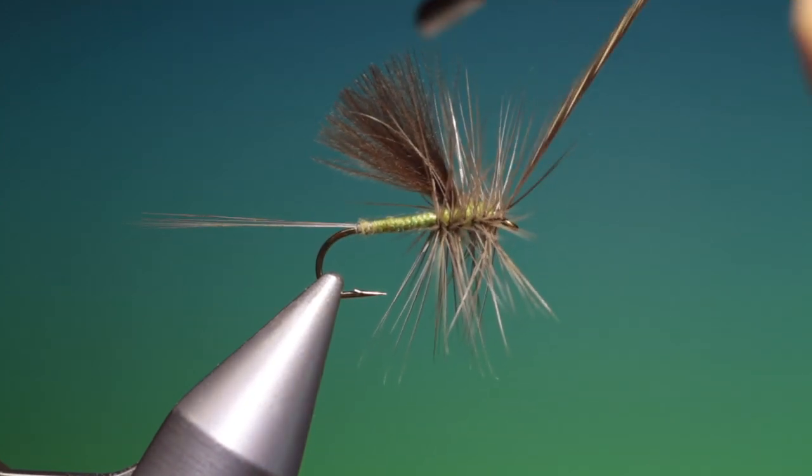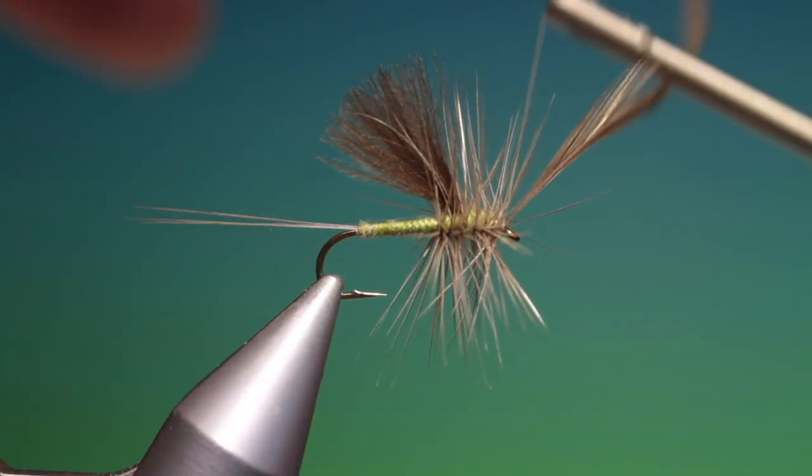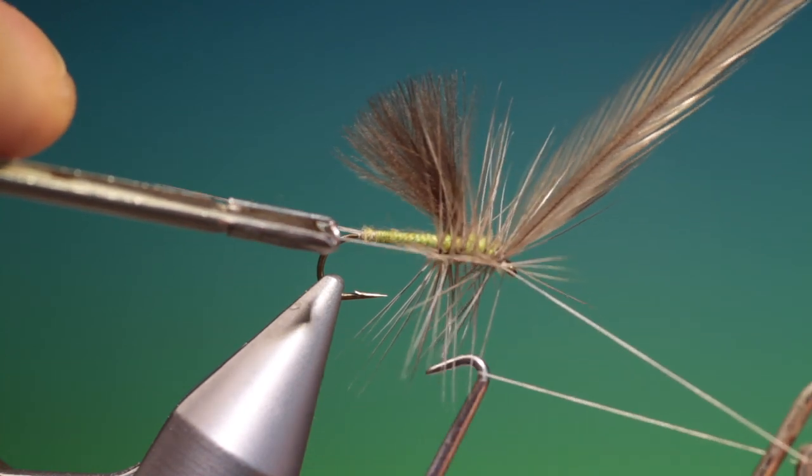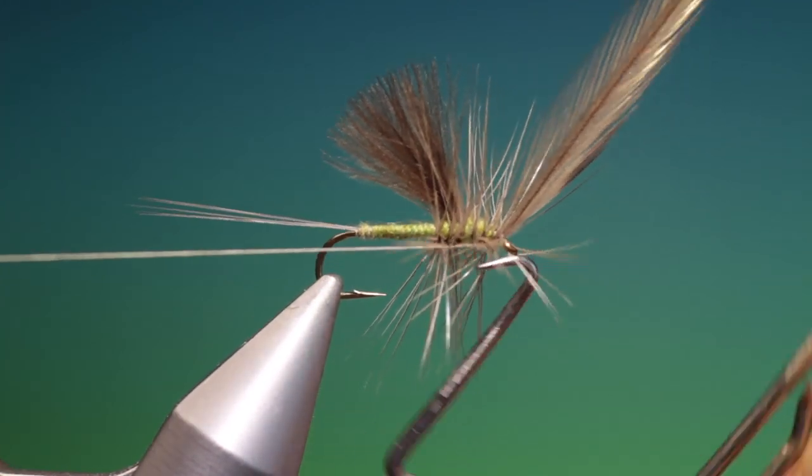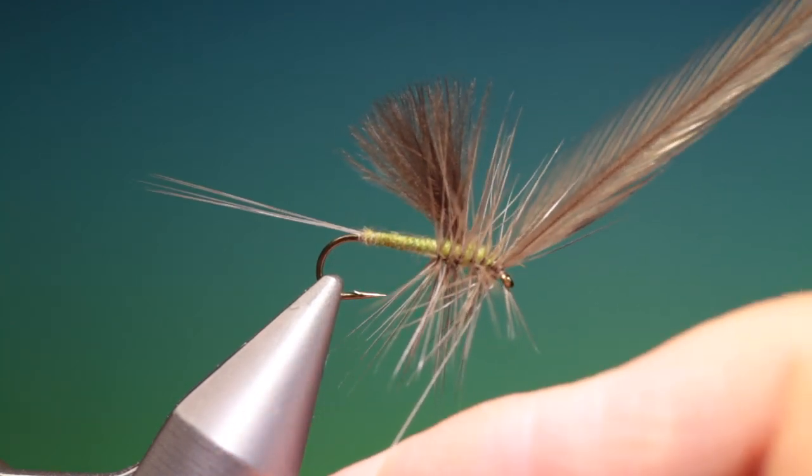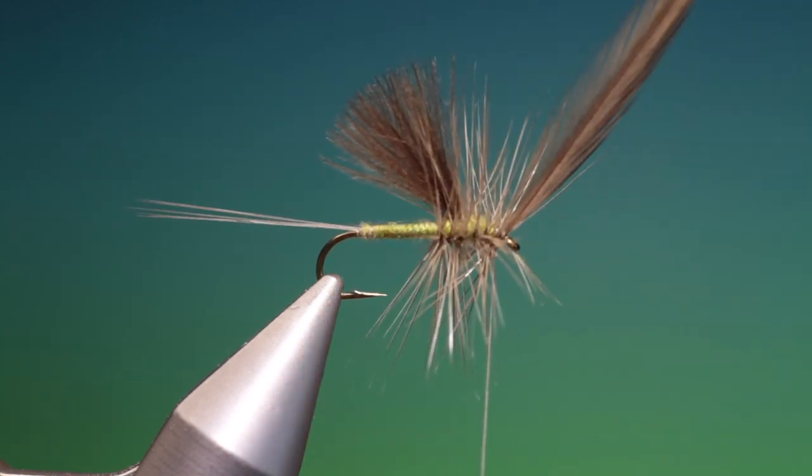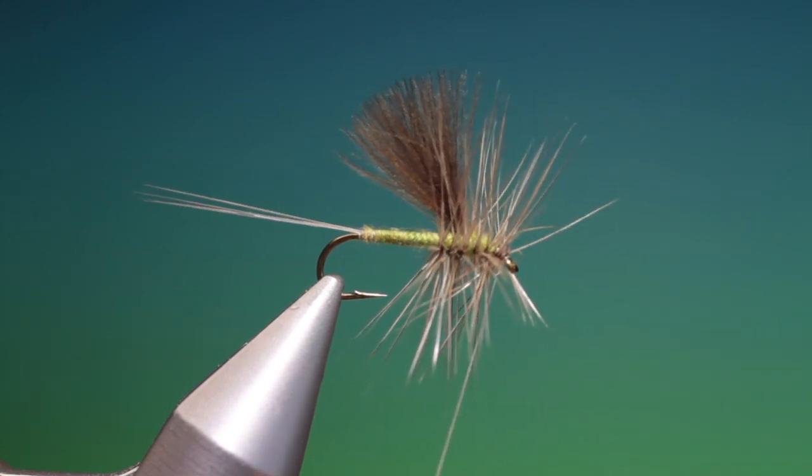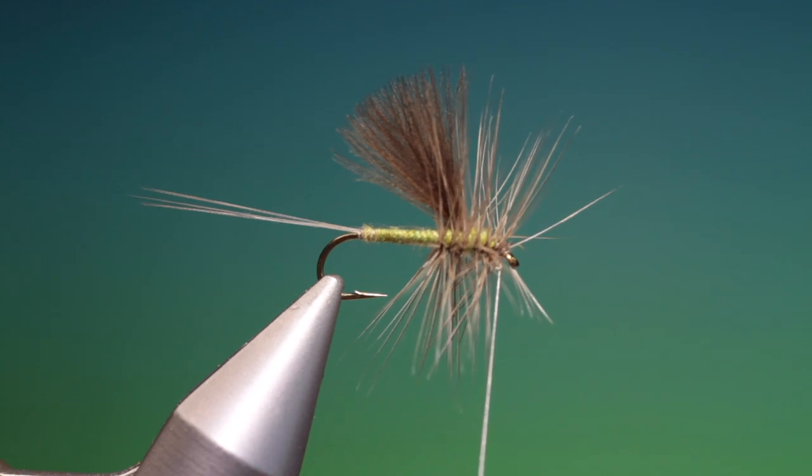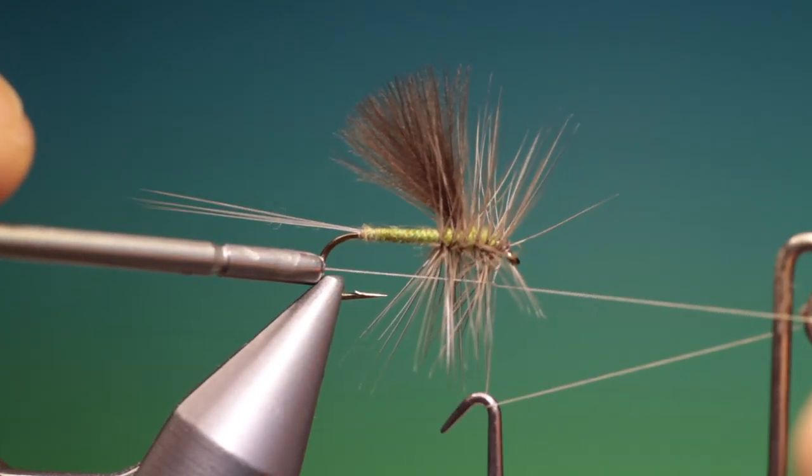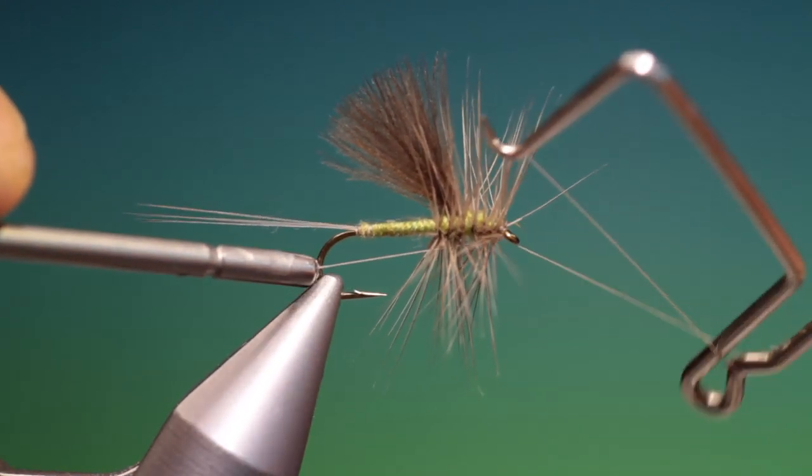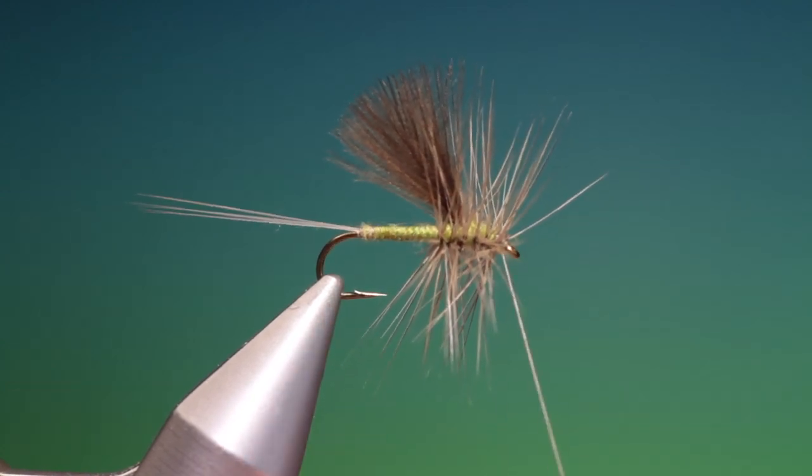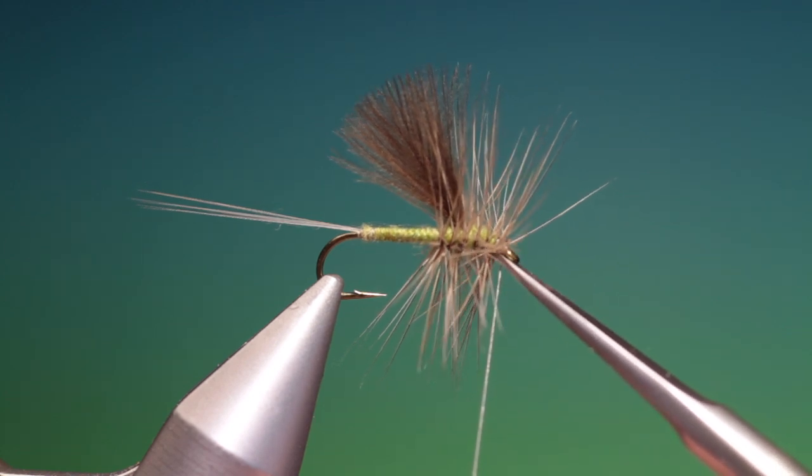And then we can tie that off. Take our whip finisher. I'll put one in there. I can remove our hackle. I can put another whip finish in. Tie thread.